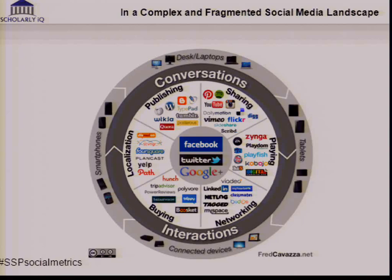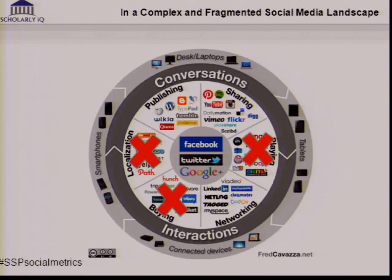We have this social media landscape that is incredibly fragmented. Sure, we've got the big three — Facebook, Twitter, Google Plus — but then there are all these different channels: publishing, sharing materials, playing, networking, buying, and localization. As publishers, we can probably set aside playing, buying, and localization. Things like publishing, sharing materials, and networking are very much where we can have some good effects.